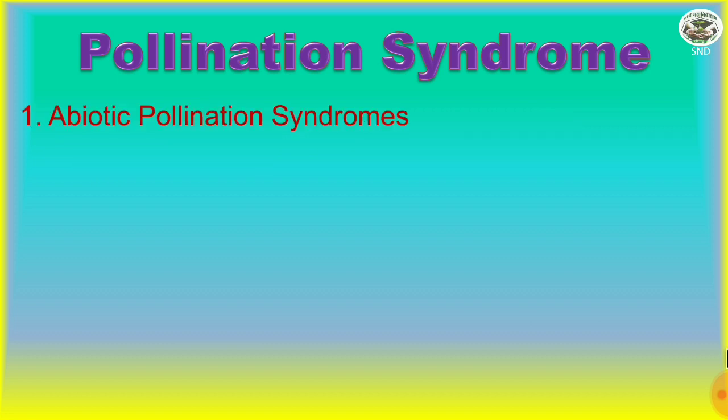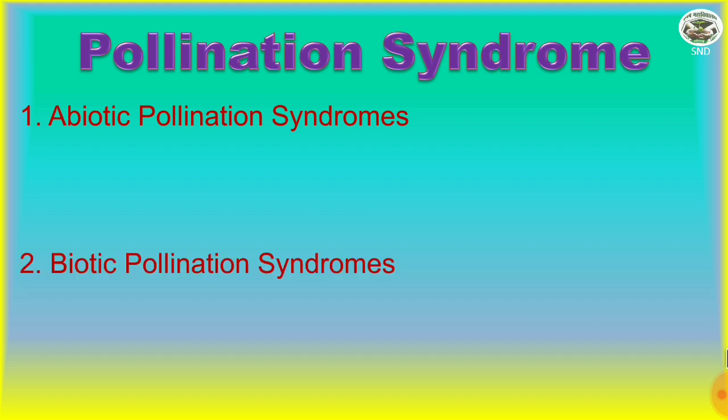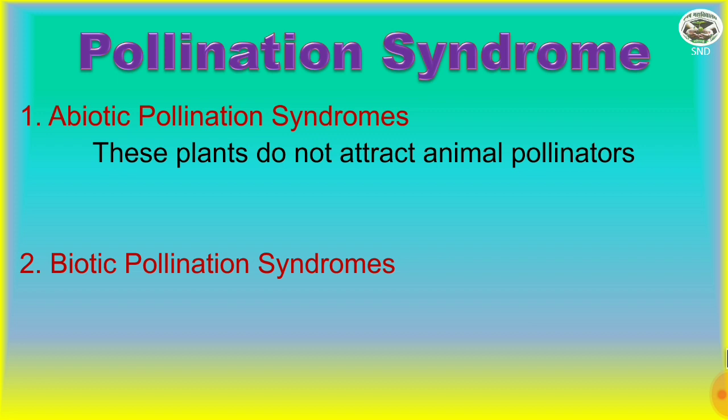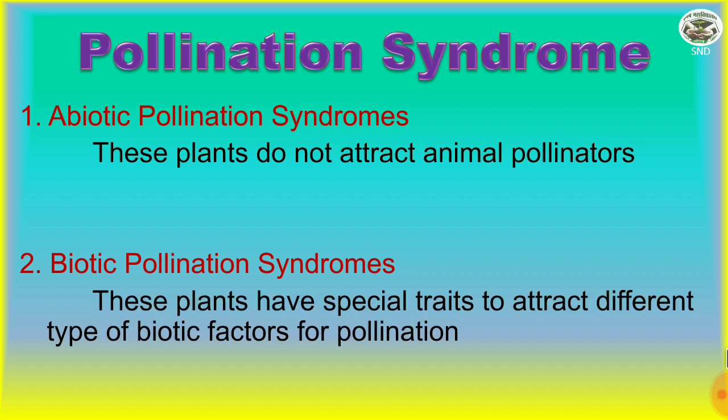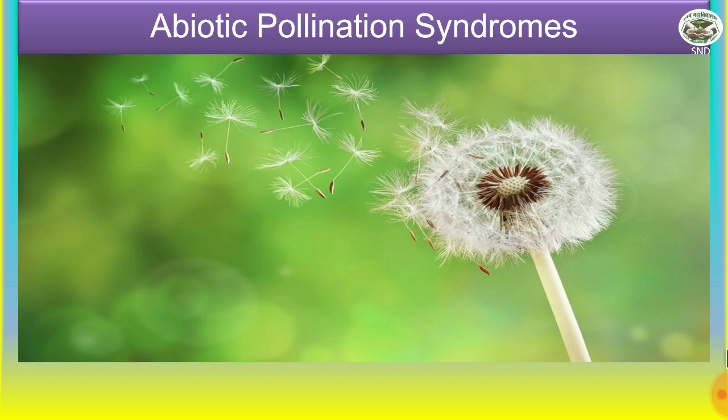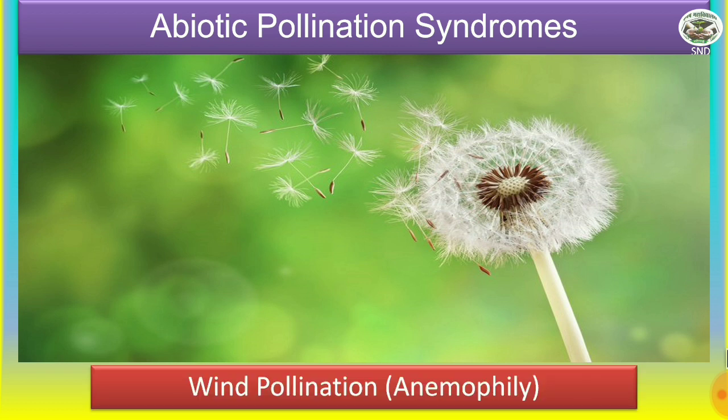Plant-pollinator interactions can be understood through pollination syndromes. There are two main types: abiotic pollination syndromes — where plants do not attract animal pollinators — and biotic pollination syndromes — where plants have special traits to attract different types of biotic factors for pollination.